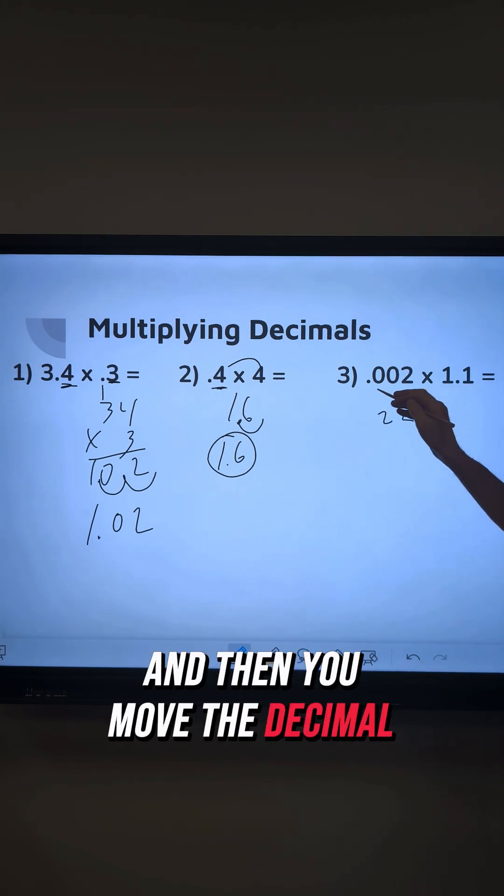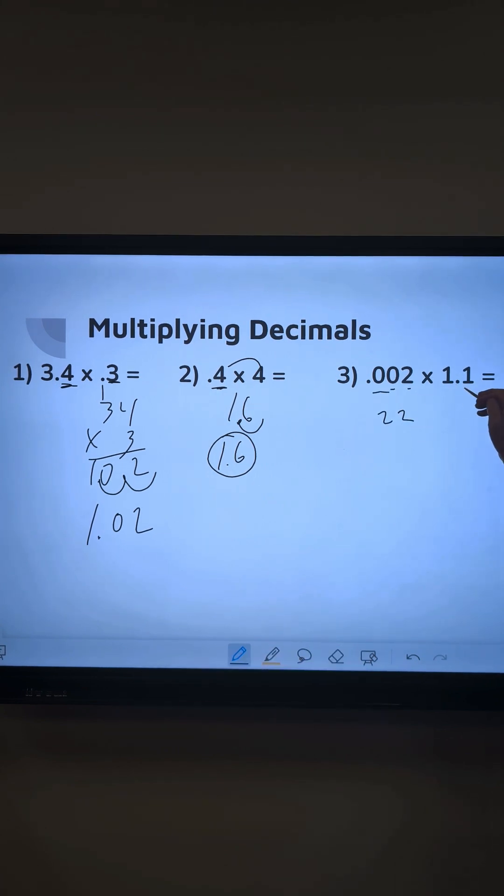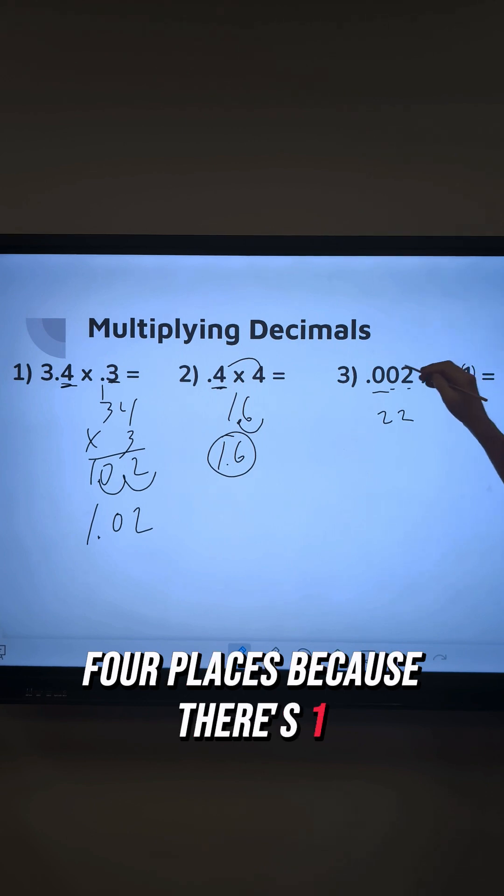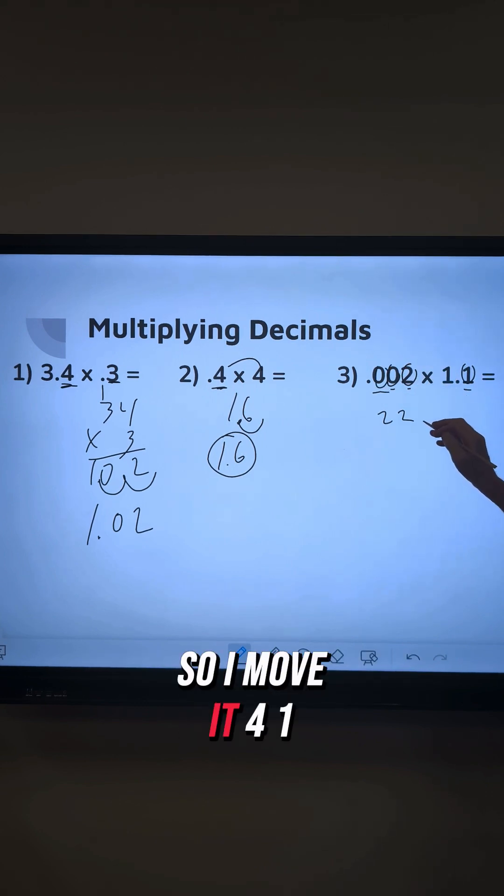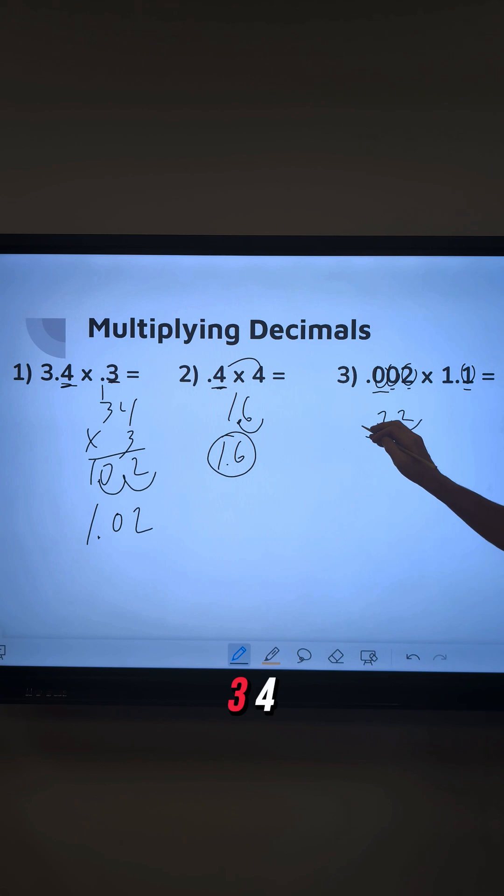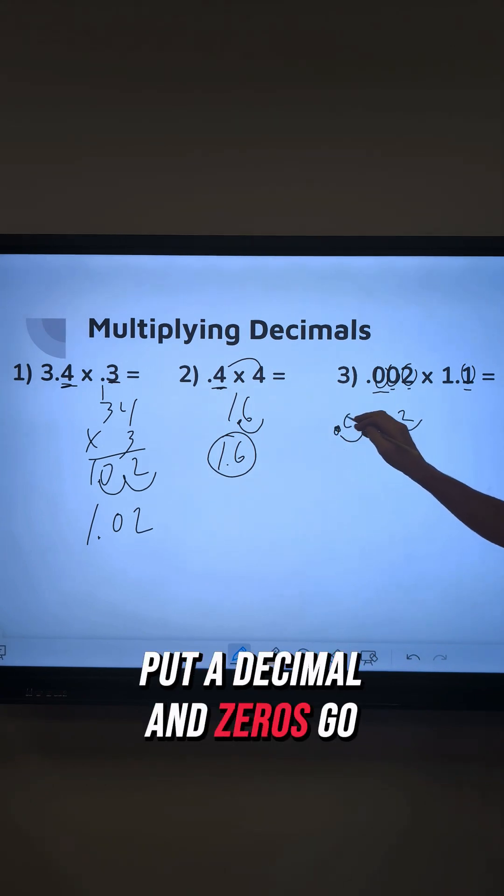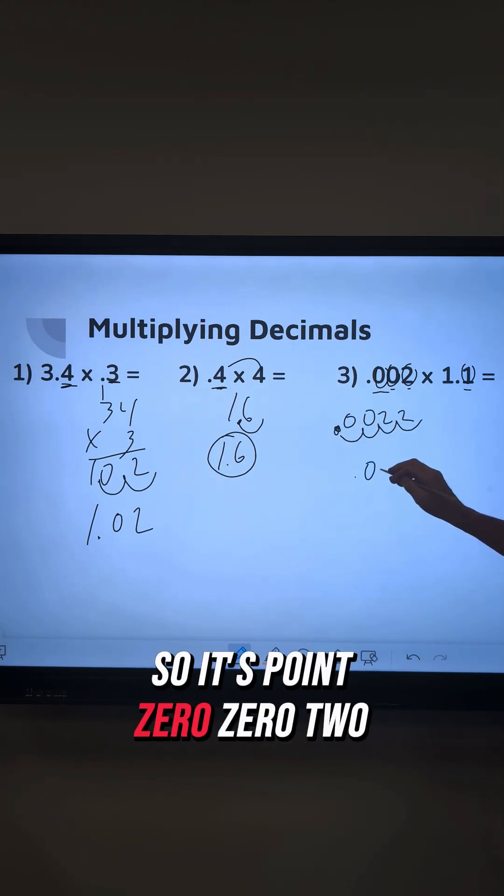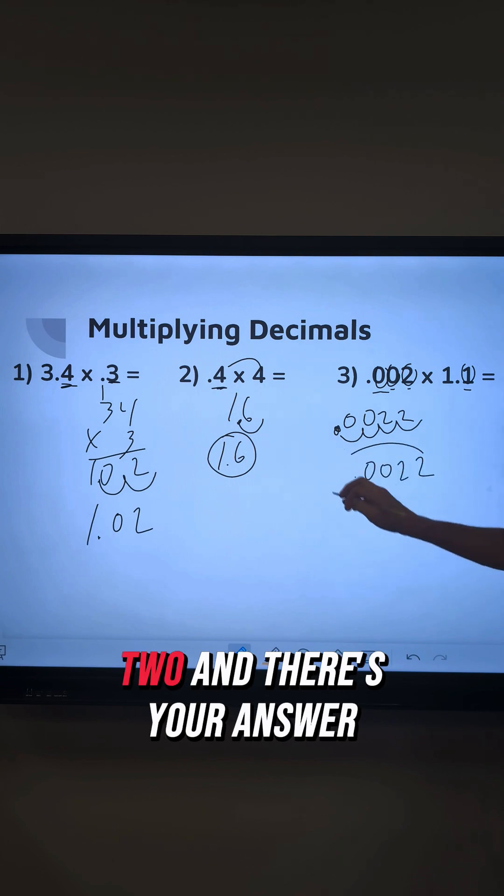And then you move the decimal 1, 2, 3, 4 places because there's 1, 2, 3, 4. So I move it forward. 1, 2, 3, 4. Put a decimal and zeros go in here. So it's 0.0022. And there's your answer.